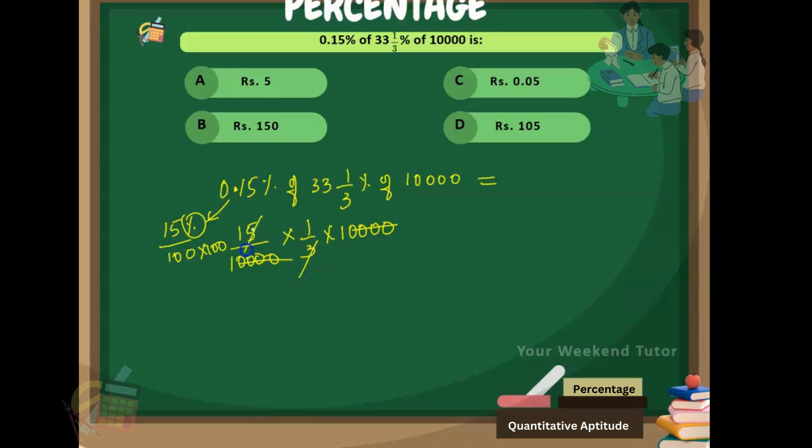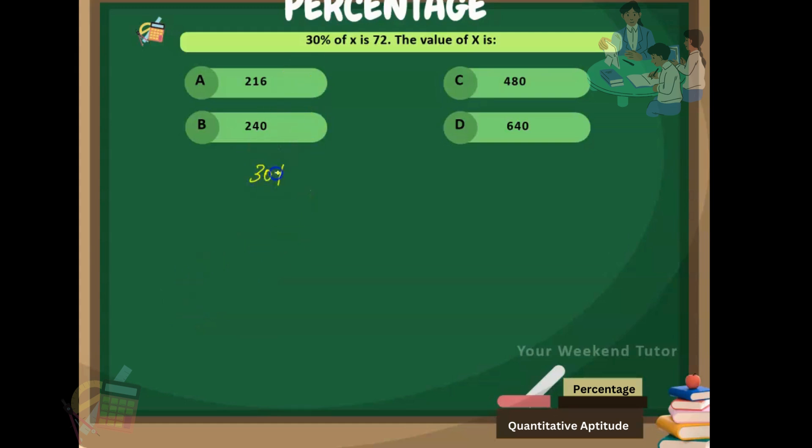Next: 30 percent of x is 72, so how much is x? It's very simple. 30 percent of x, that is 30 by 100 into x, which equals 72. Zero gets cancelled, 3x equals - 10 goes to the right hand side, that means 72 into 10, which is 720. x equals 720 by 3. 3 twos are 6, 3 fours are 12, so x equals 240. B is the correct answer.